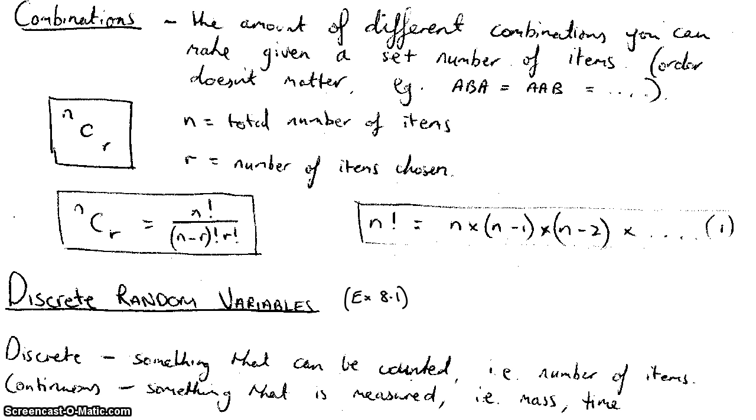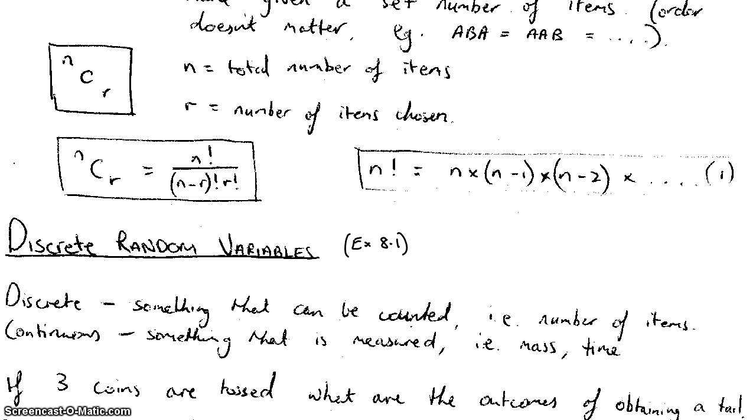Just to clarify the difference between discrete and continuous. Discrete is something that can be counted - the number of items, the number of cars, the number of people in a room, all those sorts of things. Whereas something that's considered continuous is something that is more measured - mass, time, or weight. That's kind of the difference between the two, and hopefully it will become very evident as we're doing this.